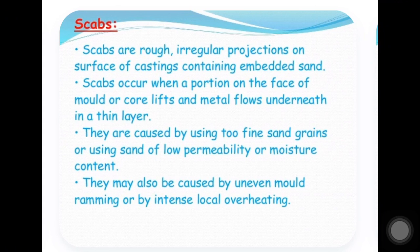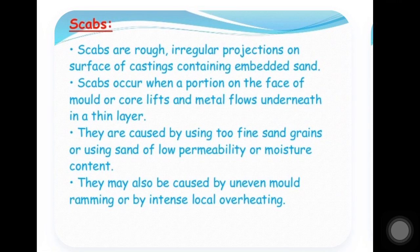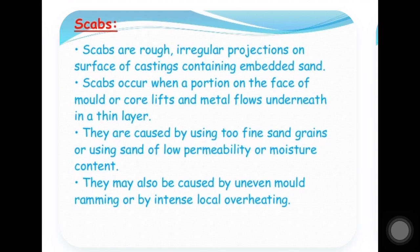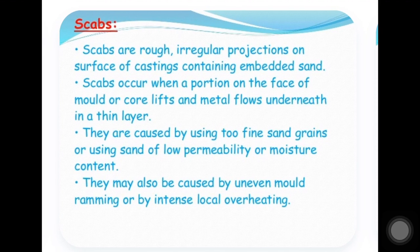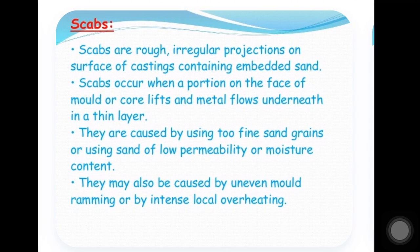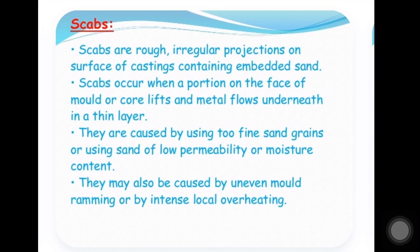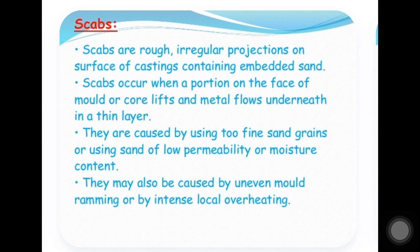The next defect is scabs. Scabs are rough, irregular projections on the surface of the casting containing embedded sand. Scabs occur when a portion of the face of the mould or core is lifted and the metal flows underneath in a thin layer. They are caused by using too fine sand grains, sand of low permeability or moisture content, uneven mould ramming, or intense local overheating.